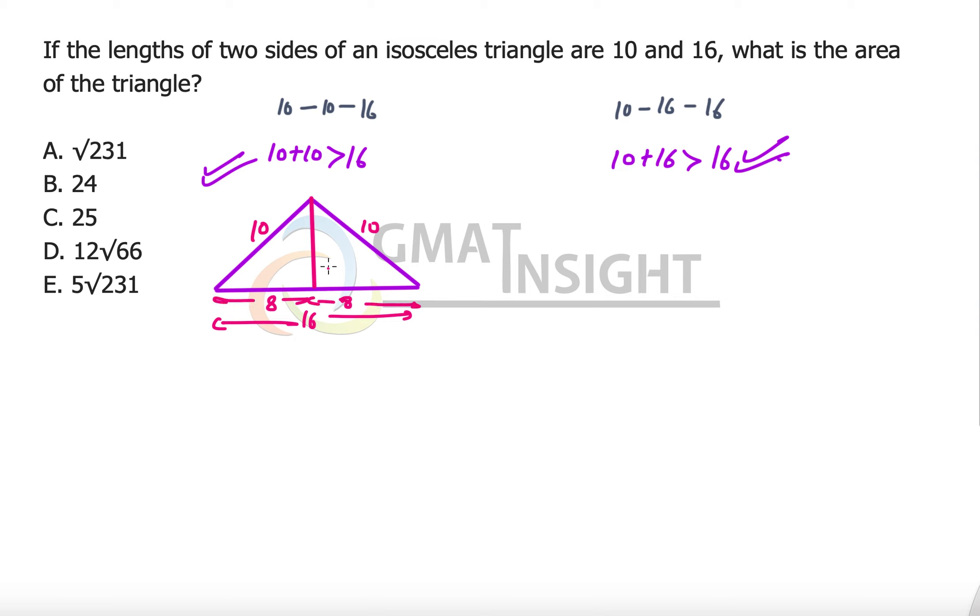Using the Pythagorean theorem, we find the height is 6. It's a 6-8-10 right triangle. The area of this triangle will be half of 16 multiplied by 6, which is 48. But we see 48 is not amongst the options.